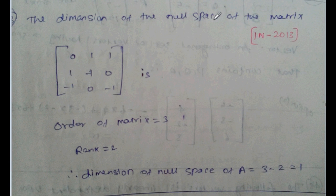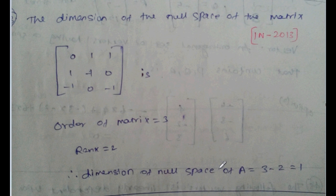Find the dimension of the null space of matrix [0,1,1; 1,-1,0; -1,0,-1]. This is a 3×3 matrix. Check the 3×3 determinant — it equals 0. Next check the 2×2 matrix — not equal to 0, so the rank is 2. The dimension of the null space equals order minus rank: 3 minus 2 equals 1.